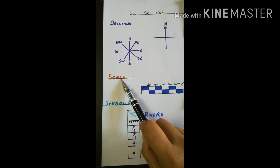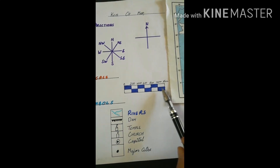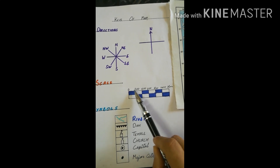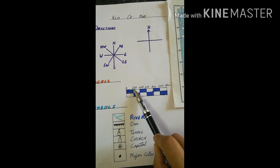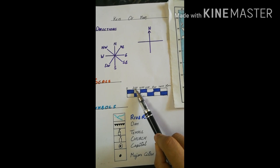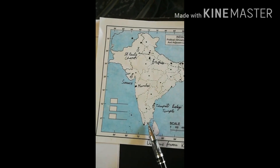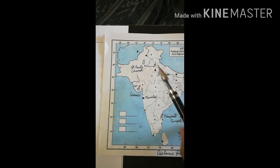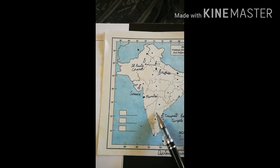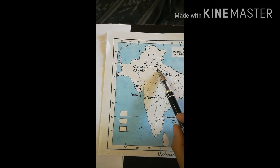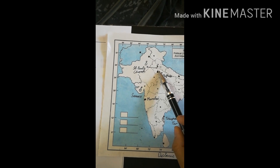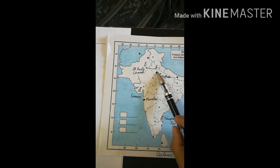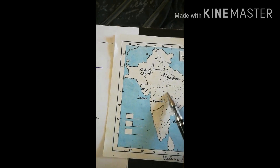Now let's move to our second topic: scale. This scale shows that 1 centimeter is equal to 200 kilometers. For example, if I have to show the distance from Kanyakumari to Delhi — the distance between Kanyakumari and Delhi is 2,835 kilometers.